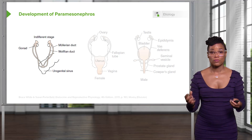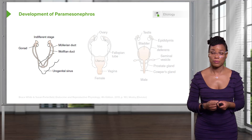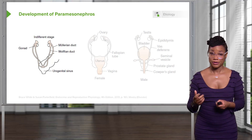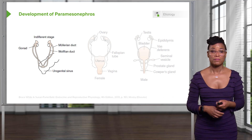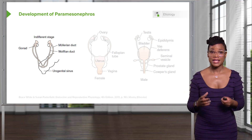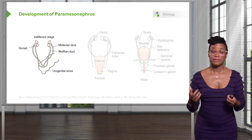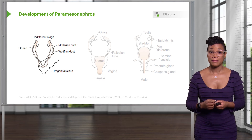Depending on whether or not you have Sertoli cells that make AMH, or anti-Müllerian hormone, you will develop either paramesonephros in the female or mesonephros in the male. We both start out with an undifferentiated stage. In the female, paramesonephros equals the Müllerian duct; in the male, mesonephros equals the Wolffian duct.